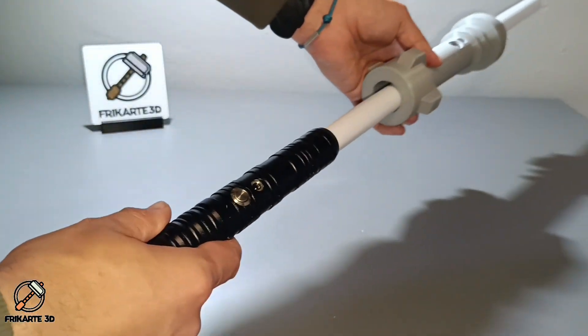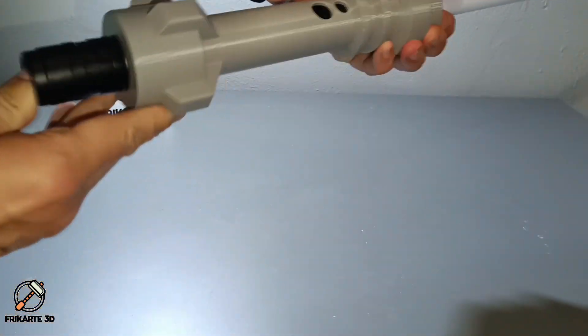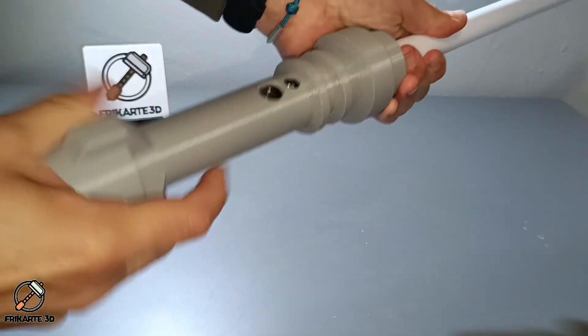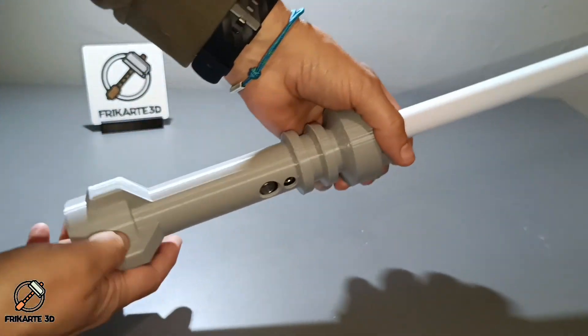To assemble, simply slide the hilt inside, always making sure the holes for the button and charger line up. As you can see, it's a very simple process—you don't need any tools or glue. Everything fits perfectly.